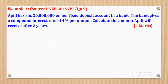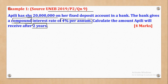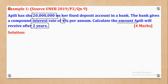We'll start with Example 1, which came from UNEB 2019 Paper 2 Question 9. It says: Apili has shillings 20 million on a fixed deposit account in a bank. The bank gives a compound interest rate of 4% per annum. Calculate the amount Apili will receive after 2 years. So N equals 2, R equals 4, and P originally is 20 million.